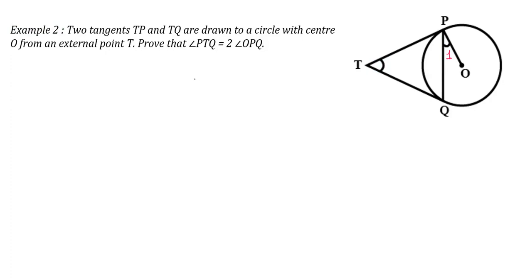All right, then we have a construction to do. In this construction, we are going to join the line — that means we'll be joining O, which is the center, with the point of contact. Let's name this angle as angle 2.